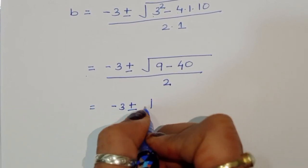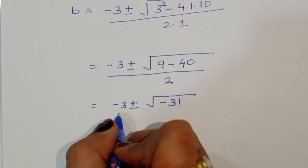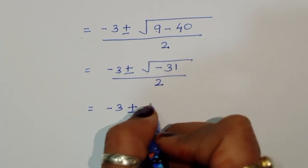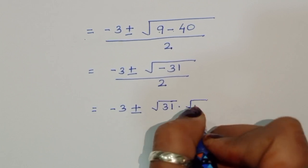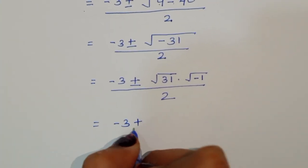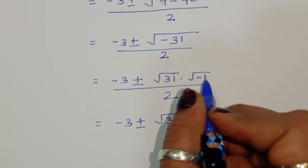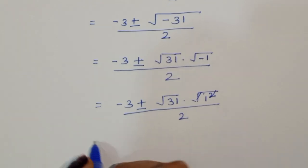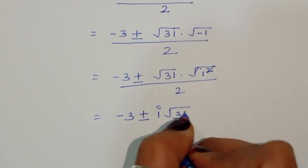This gives us: minus 3 ± √(9 minus 40) divided by 2, which equals minus 3 ± √(minus 31) divided by 2. Now √(minus 31) = √31 times √(minus 1), and since √(minus 1) = i, this becomes minus 3 ± i√31 divided by 2.